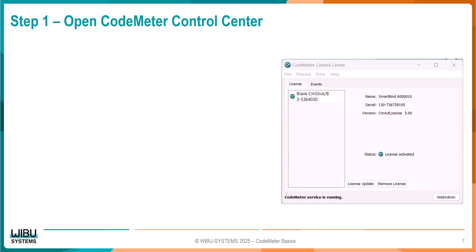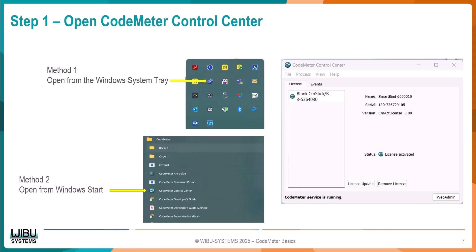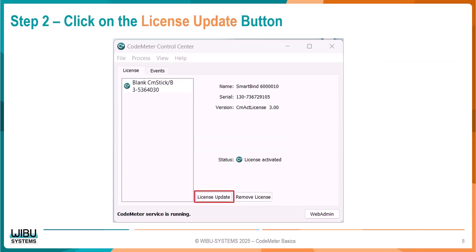The first step in creating our request file is to open the Codemeter Control Center, or CCC for short. There are two options for opening CCC: the first option is using the Windows System Tray, or alternatively, you can go to the Apps list using the Windows Start button. With CCC open, click on the License Update button.